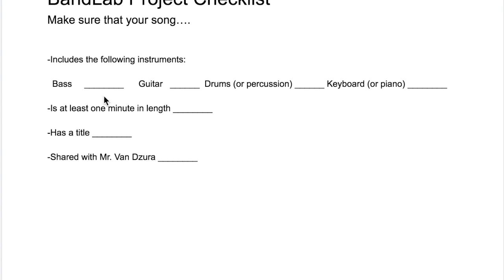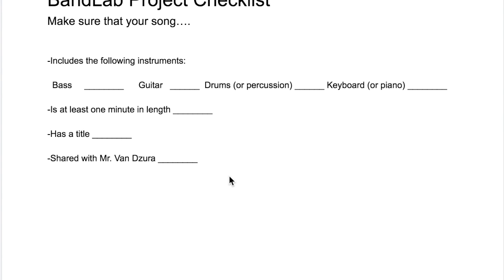That's our checklist. You'll see next to each point there is a little line that you can, if you print this out at home, check each one that you do. So once you put in bass, you can check guitar, drums, keyboard, and go through and make sure you've followed all of these. If you are able to check off every single one of these points, I promise you, you will get an A for this project. All you need to do is make sure that all of these things are present.